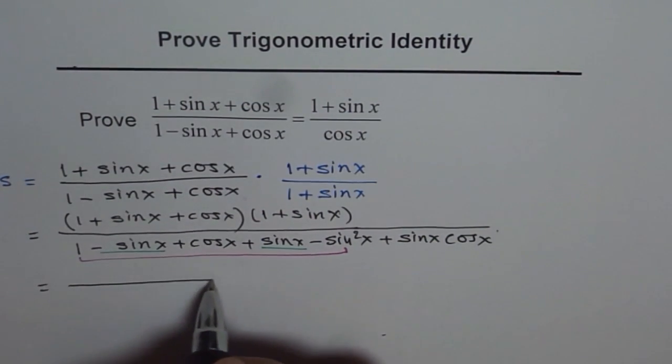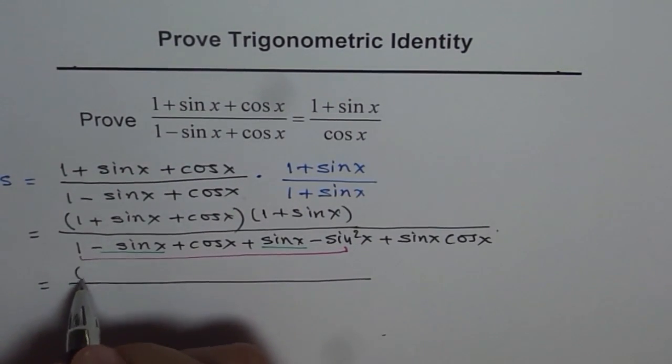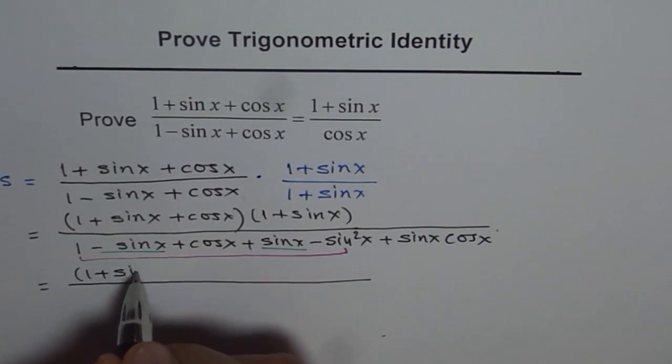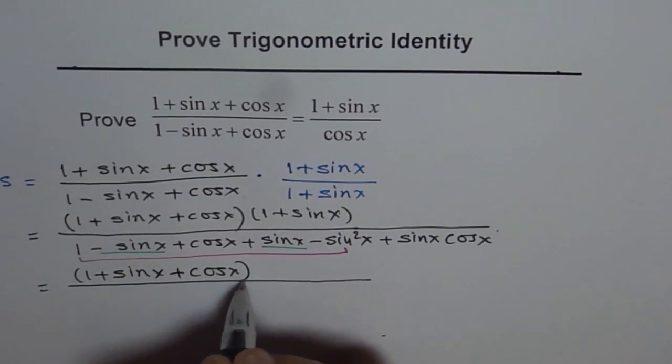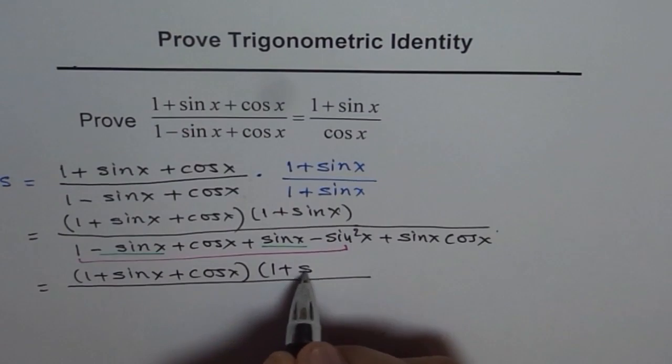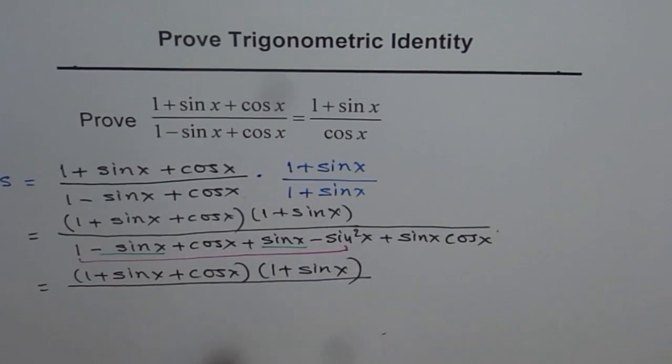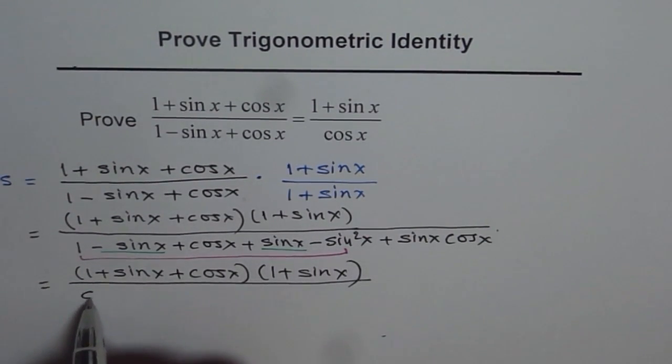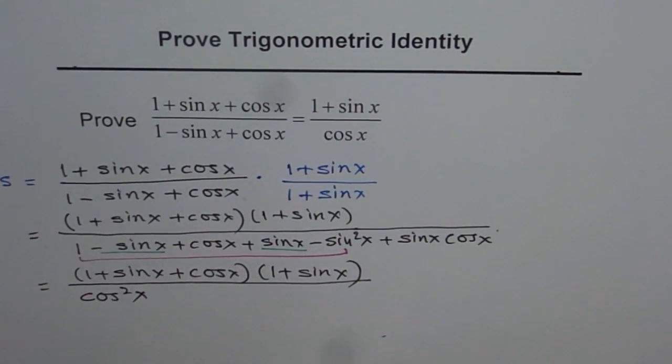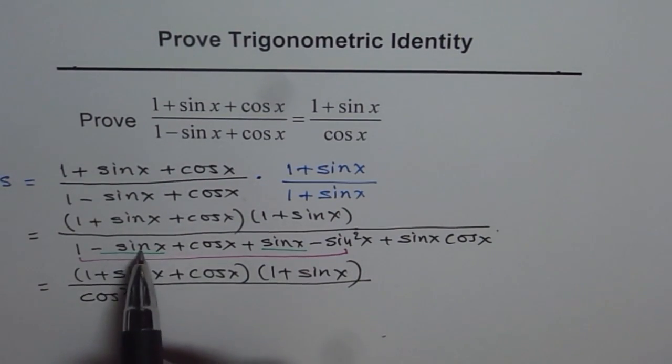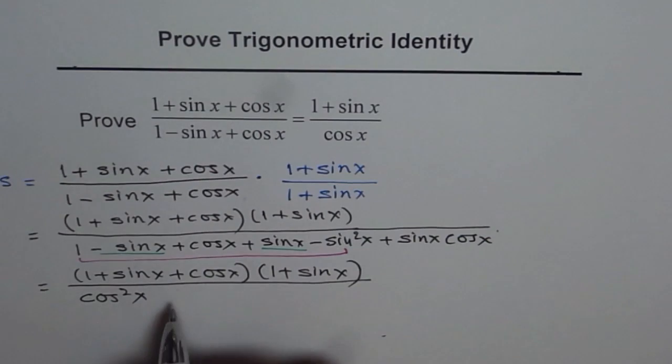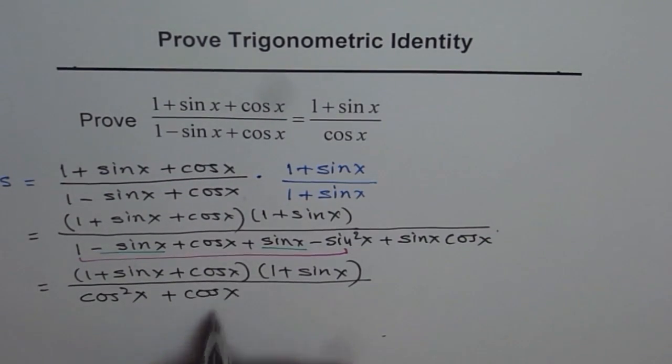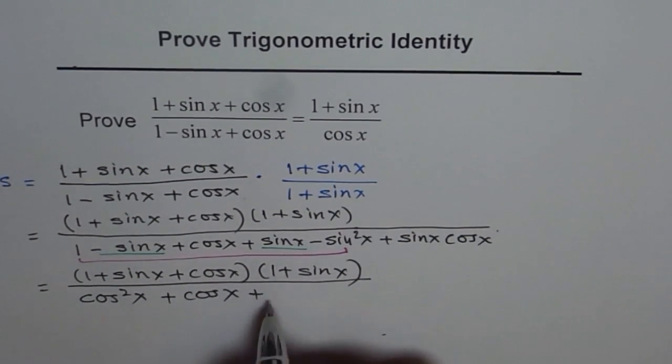On the numerator, we get (1 + sin x)(1 + sin x + cos x). In the denominator, 1 - sin² x can be written as cos² x. -sin x + sin x is zero, we're left with +cos x plus sin x cos x.